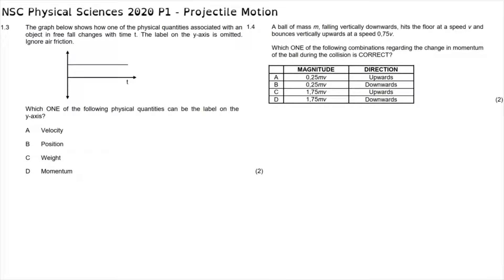The key thing to notice in this question is that we are told the object is in freefall. When in freefall, there is only one force acting on it — the force of gravity. Since there is only one force acting on it, the gravitational acceleration is constant. So the force of gravity and gravitational acceleration are constant, and in our options the weight force is the only option. So the correct answer is C.